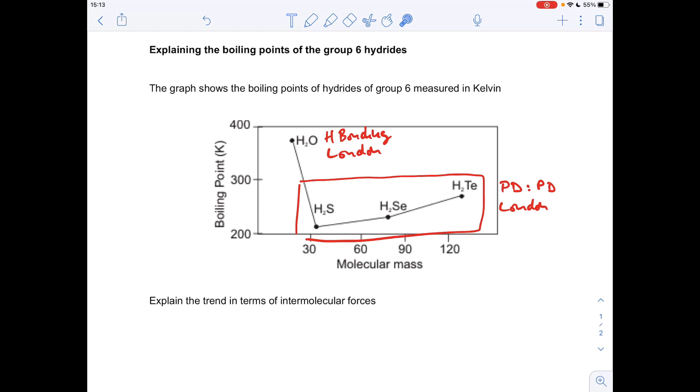So we can see from the graph that water, or H2O, has the highest boiling point, and that's because the hydrogen bonding is the strongest intermolecular force involved in these molecules.